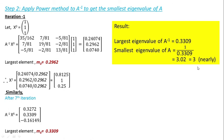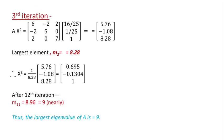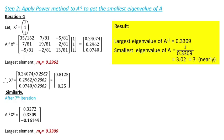Conventionally we already found the smallest eigenvalue is 3, and by using the power method we are also getting the smallest eigenvalue as 3. This is how we can apply the power method to find out the smallest and largest eigenvalue and eigenvector. Thank you for watching.